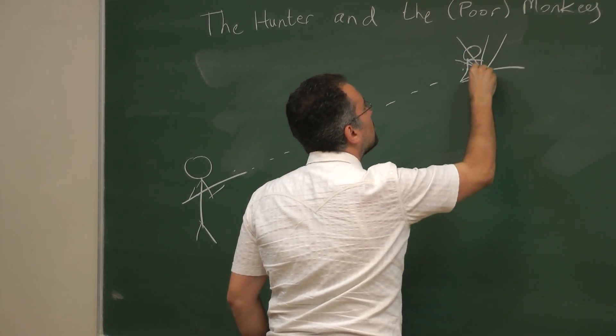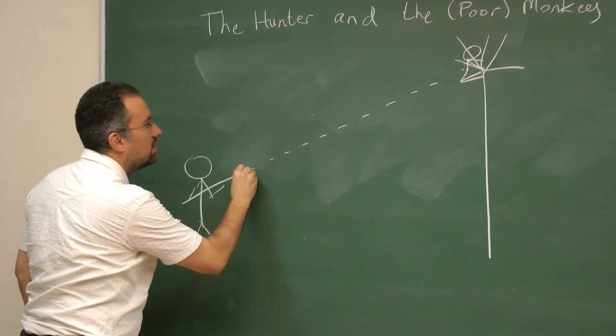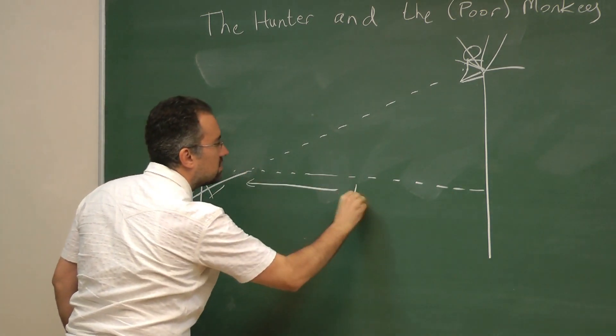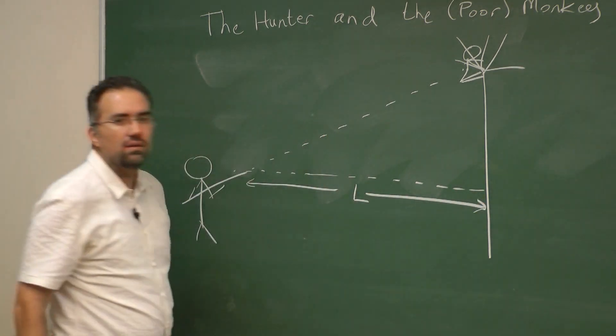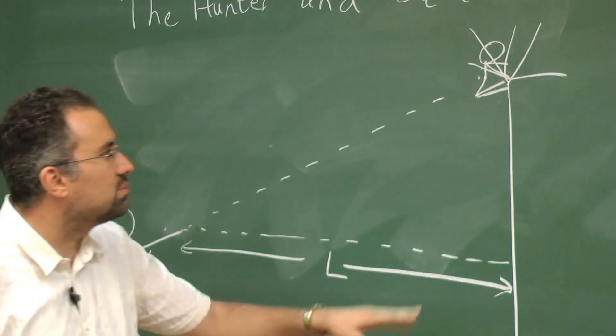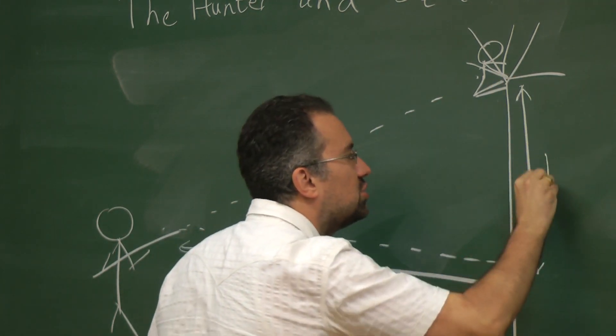I'm not sure whether that looks like a monkey or not. Okay, now he is standing at distance L from the tree. The hunter is standing at distance L from the tree. The height here we'll call that H.